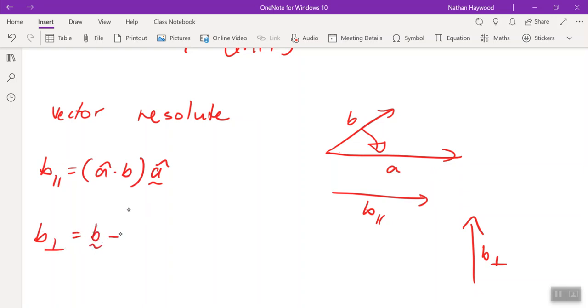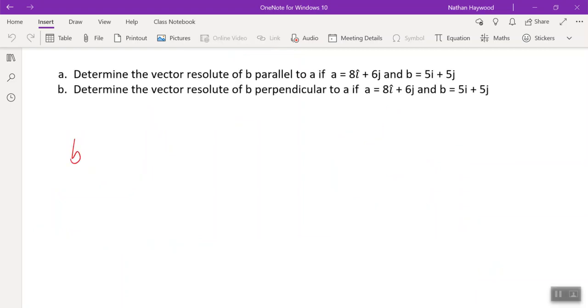If we get time, I'll explain just in a bit more. So these two formulas are vector resolutes. The projection of a vector to get a vector answer. So B parallel to A.